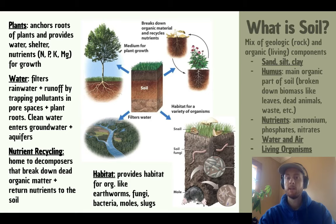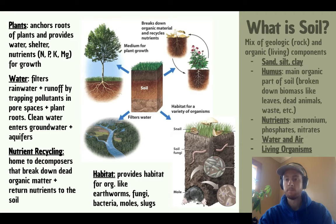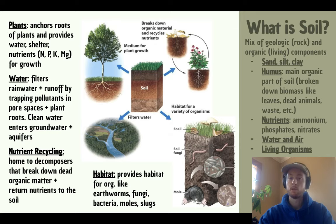Then we have humus, which is the main organic component of soil. It's that dark, rich, black substance that gives soil its characteristic color and even its smell. It's broken down organic matter like dead plants, dead leaves, animal waste, and even dead animals. Then we have nutrients in the soil — things like ammonium, phosphates, and nitrates — which are critical for plant growth. We also have water and air, which fill the little pore spaces in the soil. Air is important because it contains oxygen that plant roots need, and of course plants need water as well.